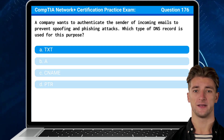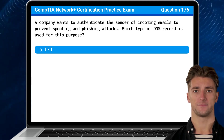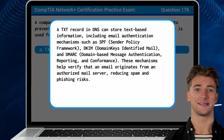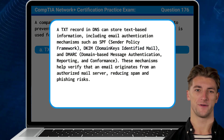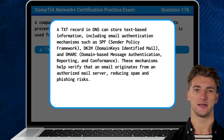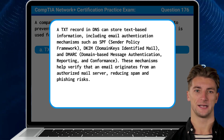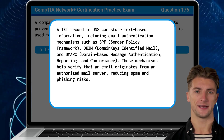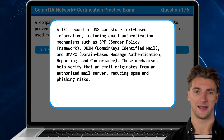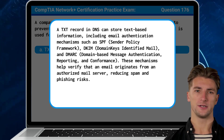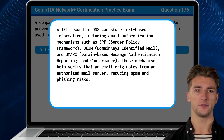The answer is A: TXT. A TXT record in DNS can store text-based information, including email authentication mechanisms such as SPF (Sender Policy Framework), DKIM (Domain Keys Identified Mail), and DMARC (Domain-based Message Authentication, Reporting, and Conformance). These mechanisms help verify that an email originates from an authorized mail server, reducing spam and phishing risks.